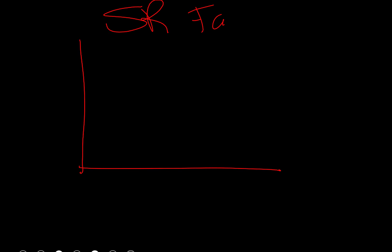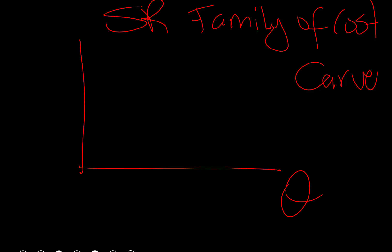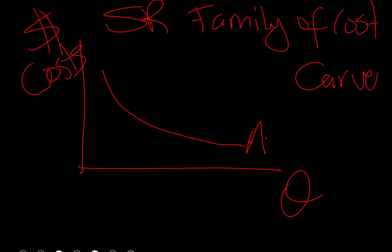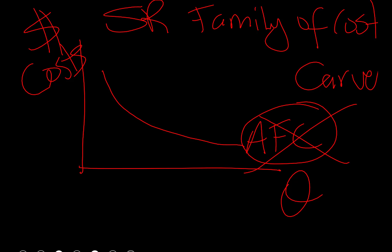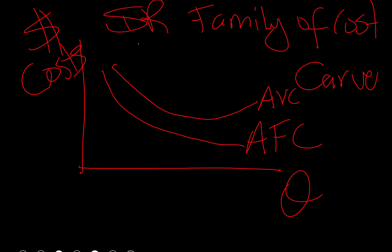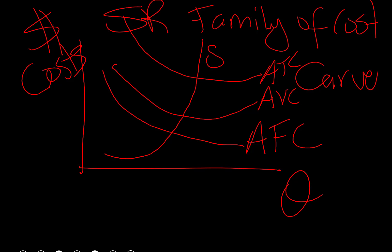Let's draw the short run family of cost curves. On a graph with costs in dollars and quantity on the x-axis: average fixed cost declines continuously. Average variable cost is U-shaped. Average total cost is also U-shaped. Short run marginal cost is also U-shaped, and it cuts both average variable cost and average total cost at their lowest points.